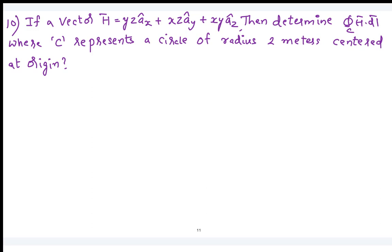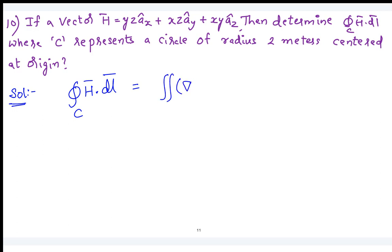There is a vector which has been given; find the closed line integral of H dot dl. The contour C represents a circle of radius 2 meters centered at the origin. Since the line integral is closed, we can use Stokes' theorem to convert it into a surface integral: curl of H dot dS.